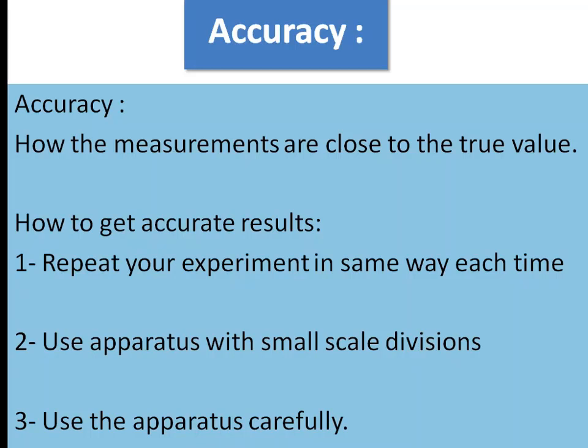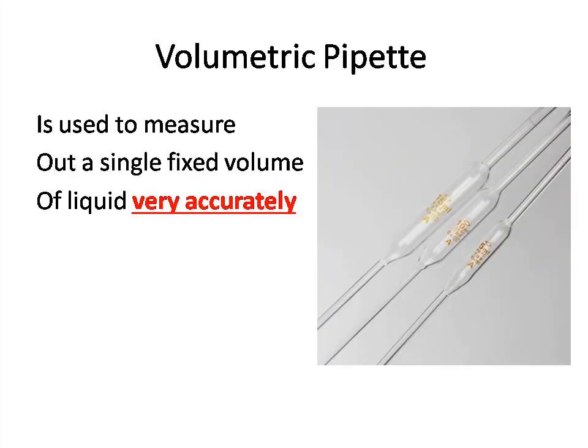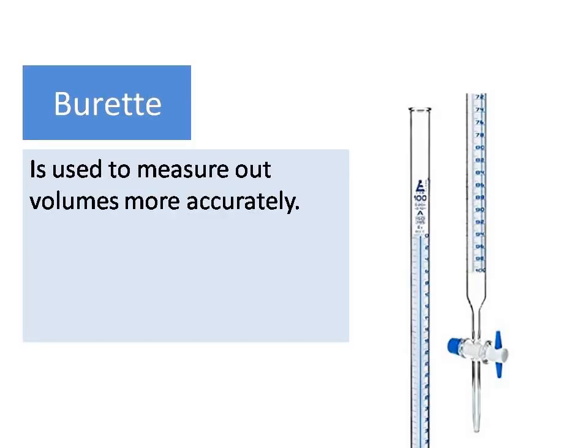Volumetric pipettes are made in only a few sizes, the most common being 10 cm³ and 25 cm³, and they are very accurate. Burettes are another accurate tool for measuring the volume of liquids; they can be used to accurately deliver up to 50 cm³ of liquid, so they can occupy a relatively large volume of liquid.